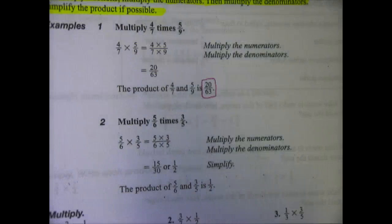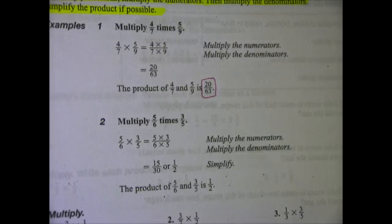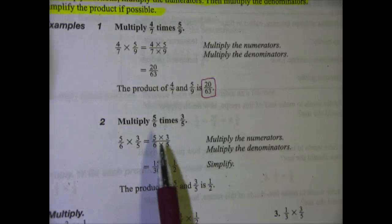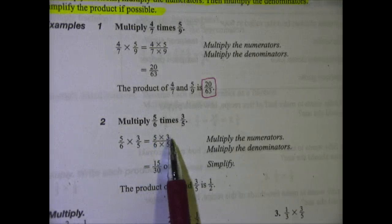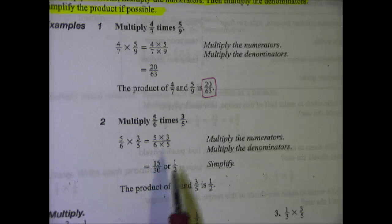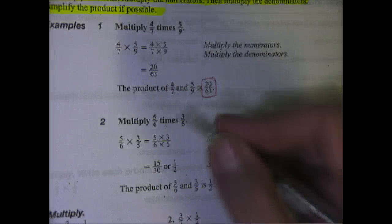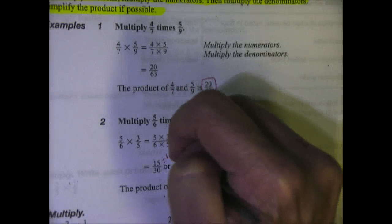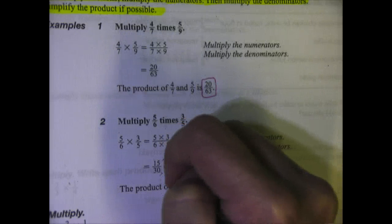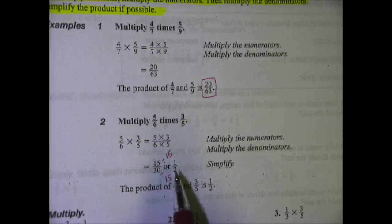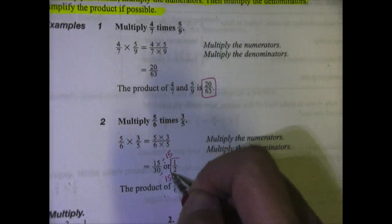On the second one, multiply 5/6 times 3/5. Again, they show you the method that is mentioned up at the top. Multiply the numerators, 5 times 3 is 15. Multiply the denominators, 6 times 5 is 30. And simplify it because the GCF of 15 and 30 is 15. So you're dividing both the numerator and the denominator by 15, and you get 1/2.